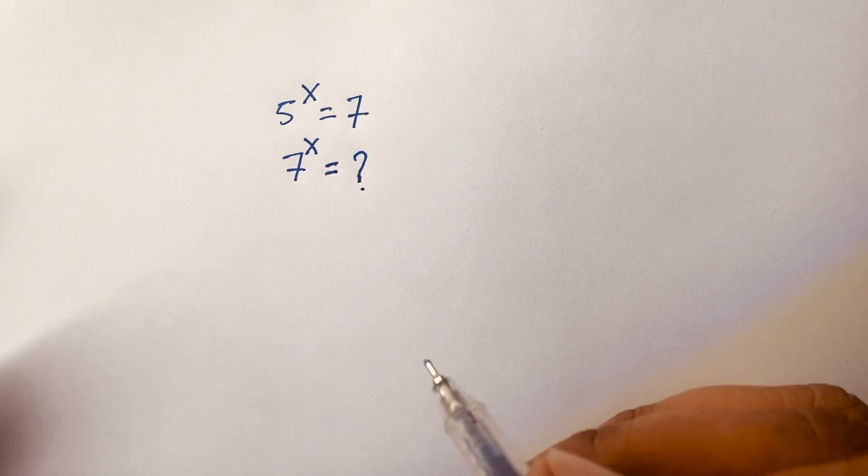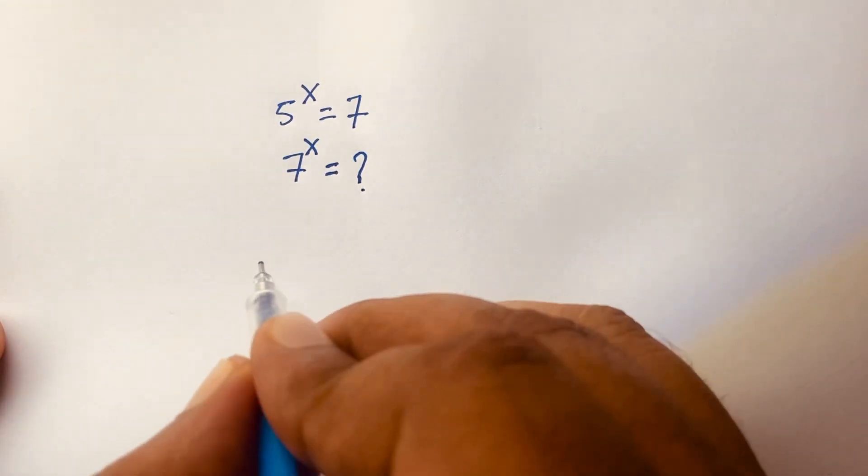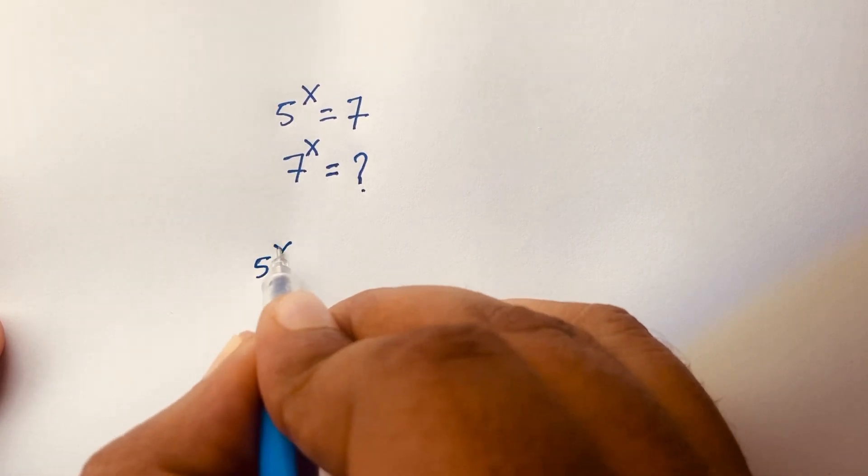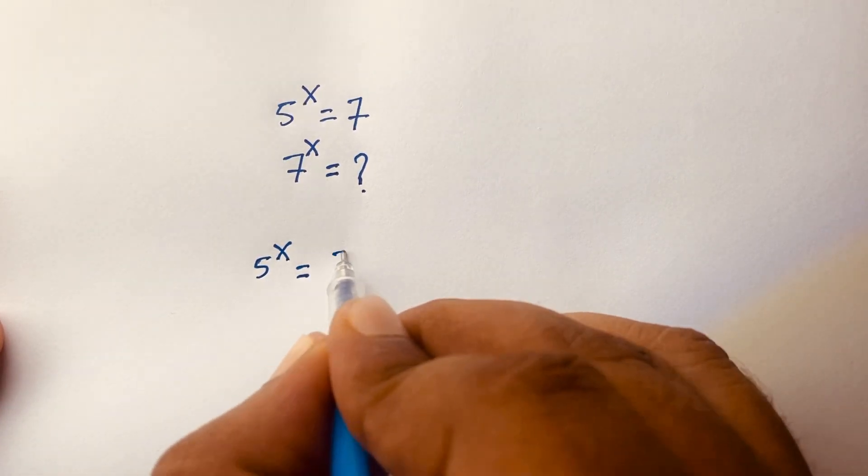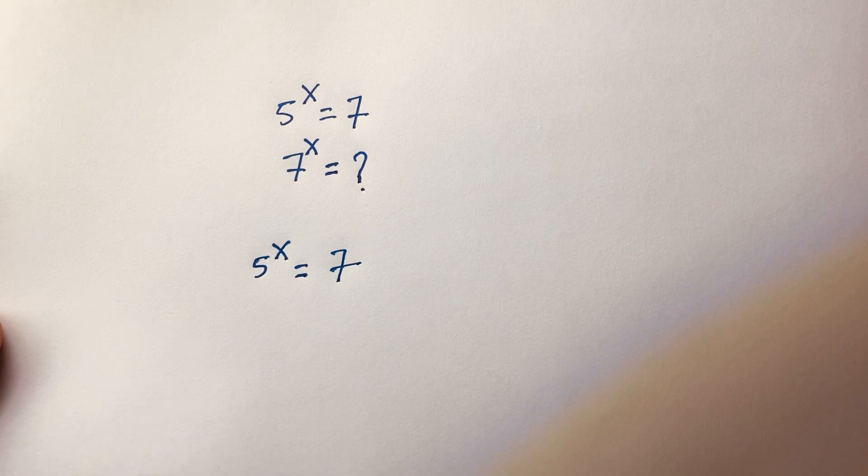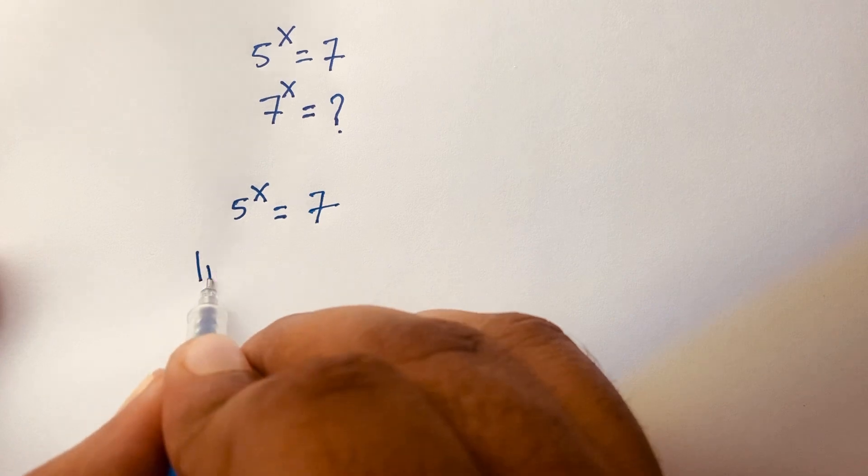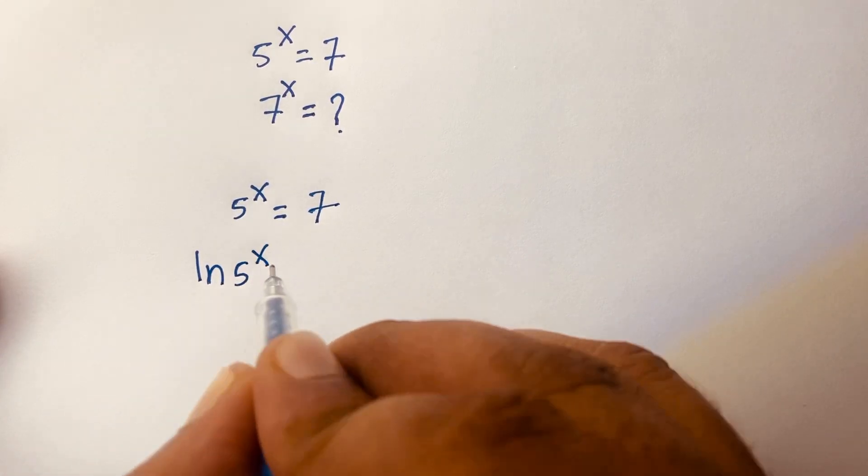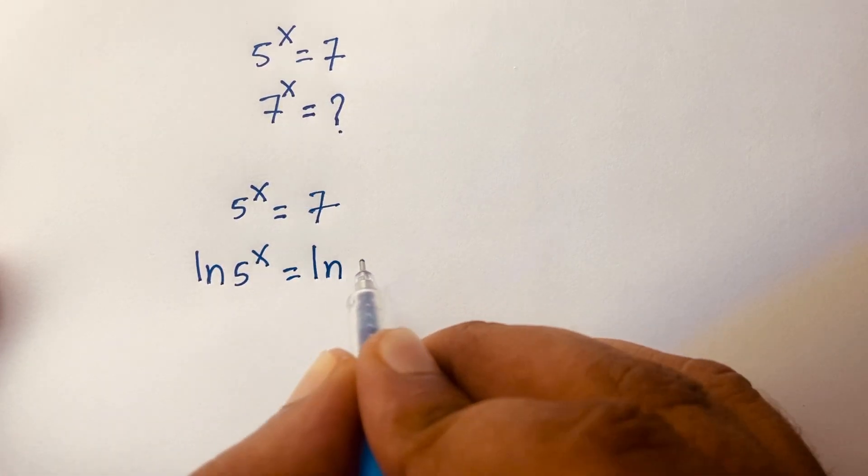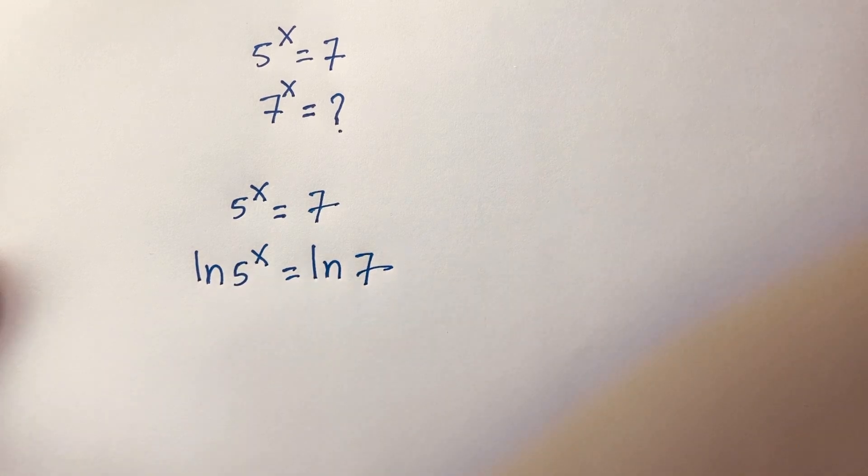First of all, I can say here is 5 to the power x is equal to 7. Then I use both side ln, so I can say easily ln of 5 to the power x is equal to ln of 7. I use both side ln.